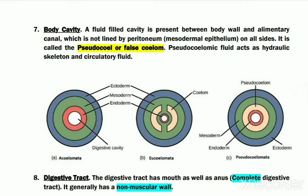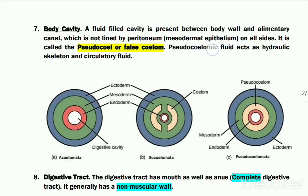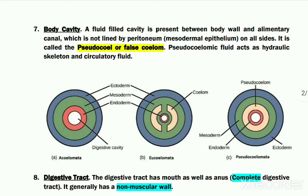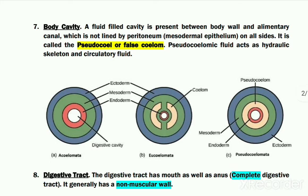This pseudocoelom of sk-helminths is filled with a fluid called pseudocoelomic fluid, which acts as a hydraulic skeleton — helping to maintain body shape. It also acts as a circulatory fluid, helping in transfer of materials from one part of the body to another.